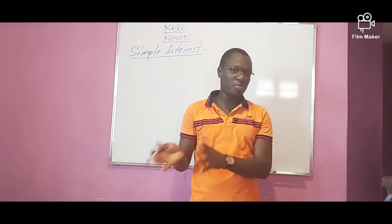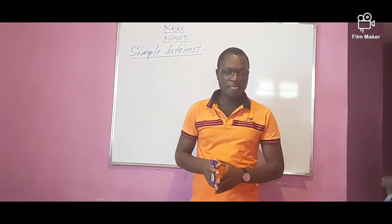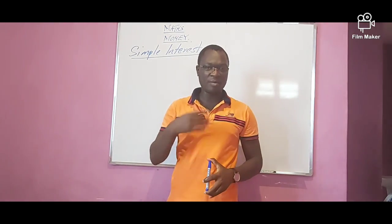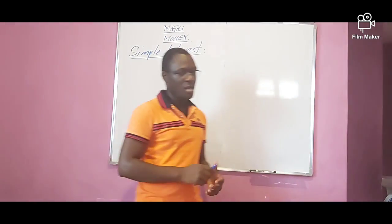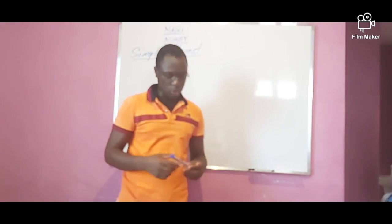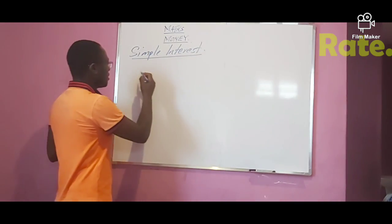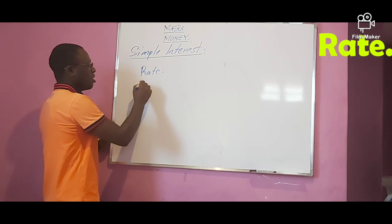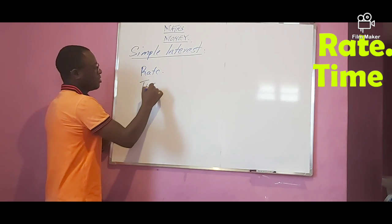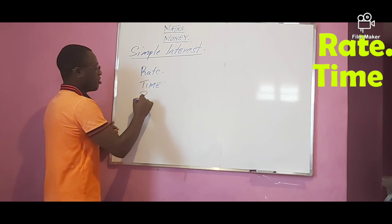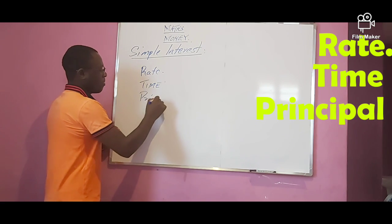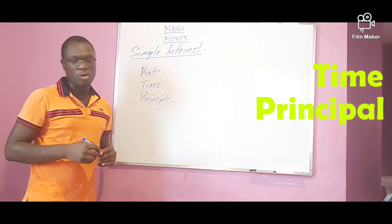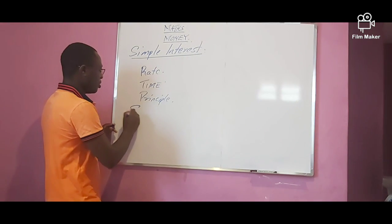The Branch — they use simple interest to do calculations on how much someone is supposed to pay after borrowing money for a period of time. There are three terms that we are supposed to be aware of, and that is the rate, the time taken, and the principal. These three terms are very important when we talk about simple interest.